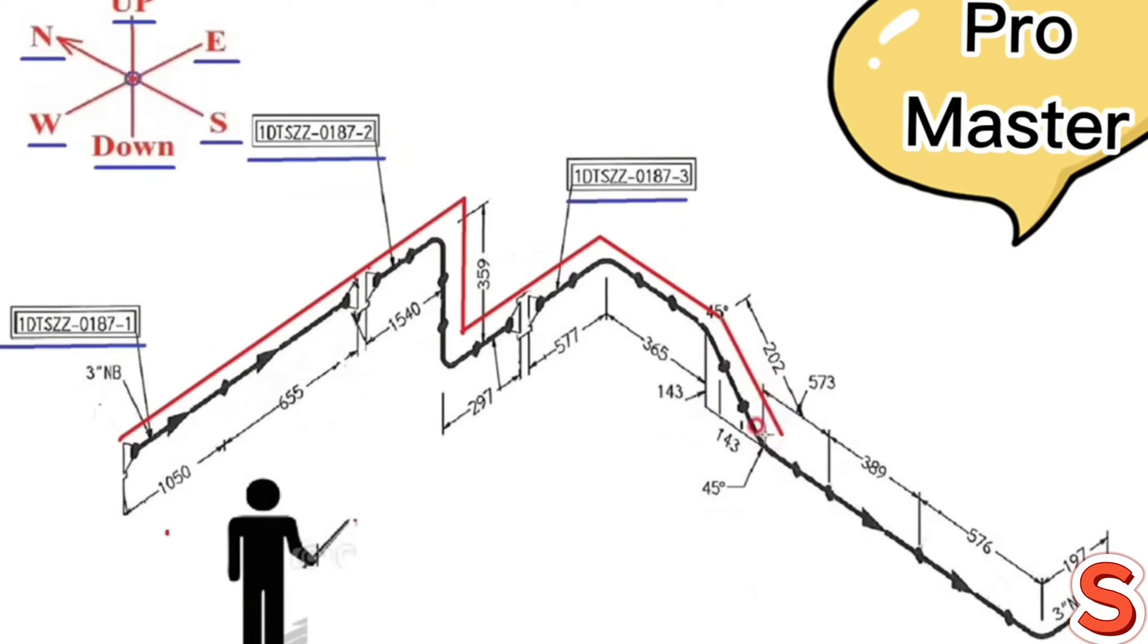Then the pipe travels continue to the south direction. From here pipe turn to the east direction. And the correct reading of the pipe drawing is completed.